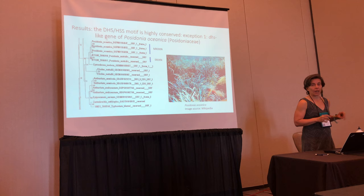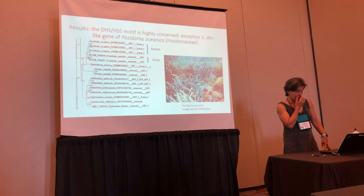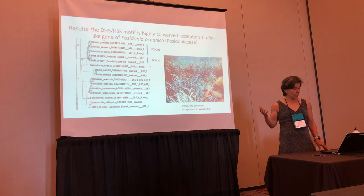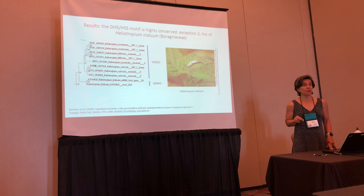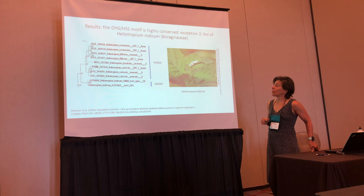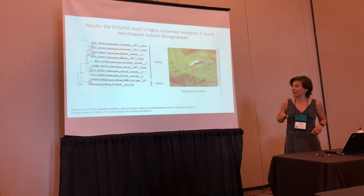I'm not going to show you the entire gene tree; I'll give a couple of vignettes from it to answer our questions. Regarding how conserved the motif is — it is actually highly conserved. I found only two species with a different motif: Posidonia oceanica, a seagrass, which has an MN motif (though Posidonia australis has the characteristic DHS IN motif), and Heliotropium indicum, which has a functionally characterized HSS. However, given how conserved this motif is otherwise, my first hypothesis for these aberrant motifs is that there may be a sequencing error, which we need to investigate.